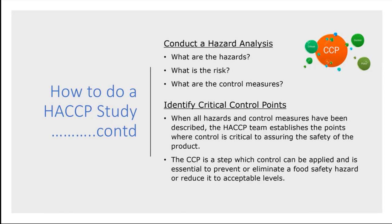We then want to look at what critical control points are required. When a hazard and a control measure have been described, we want to establish the points where control is critical to ensure the safety of the product. What we mean by critical is: if this activity slipped, we would have a potential major incident on our hands. A critical control point is a step at which control can be applied and is essential to prevent or eliminate a food safety hazard, or as a minimum reduce it to an acceptable level.